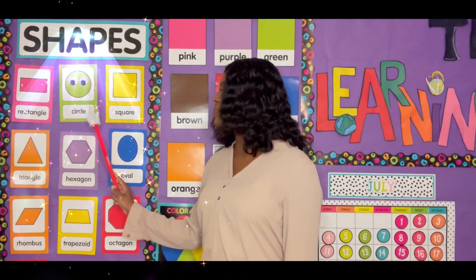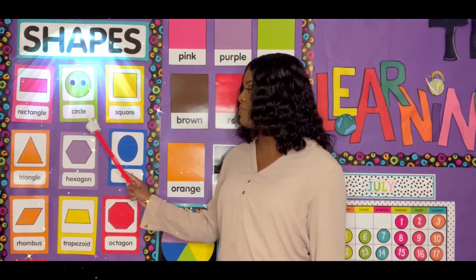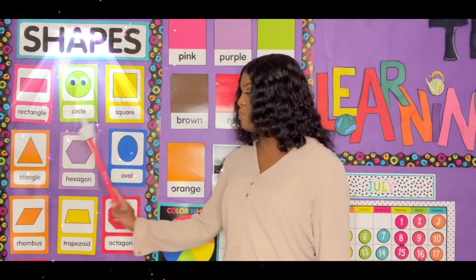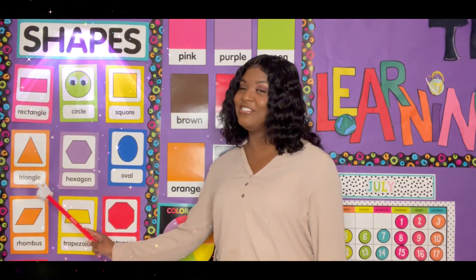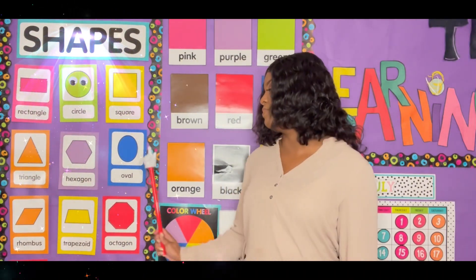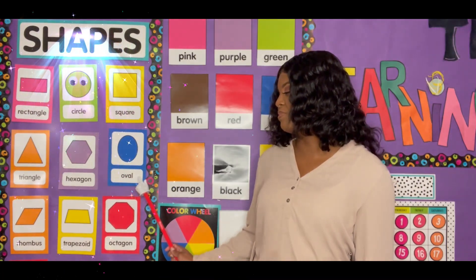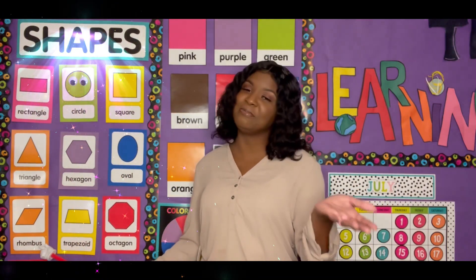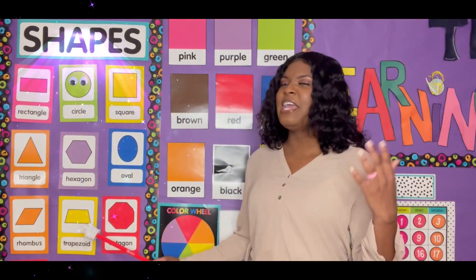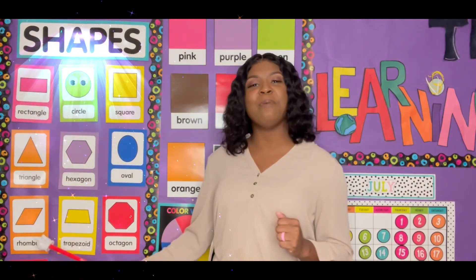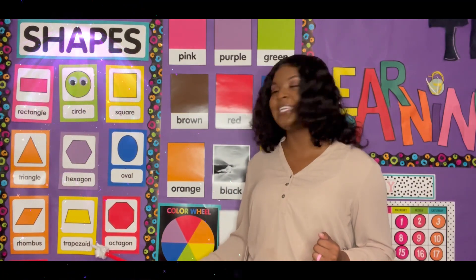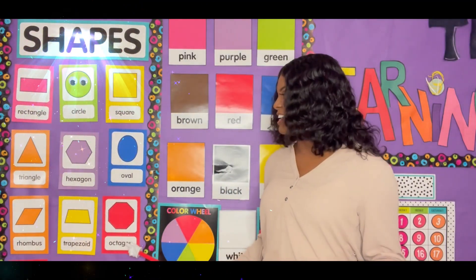Circle, square, triangle, hexagon, oval, rhombus. Sometimes he could be called a diamond, but in the Learning Lab we're going to call him rhombus. Trapezoid and octagon.